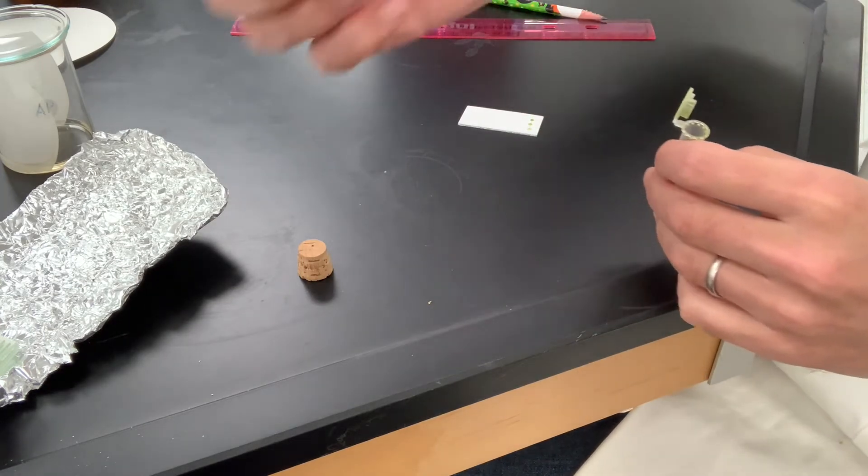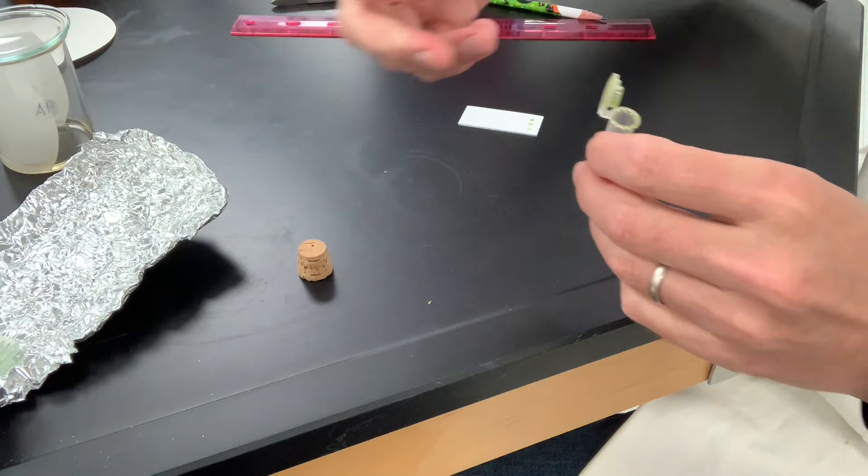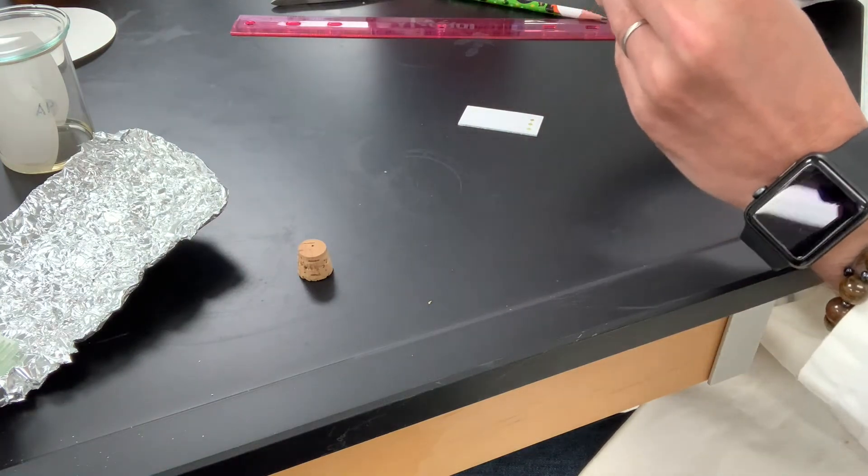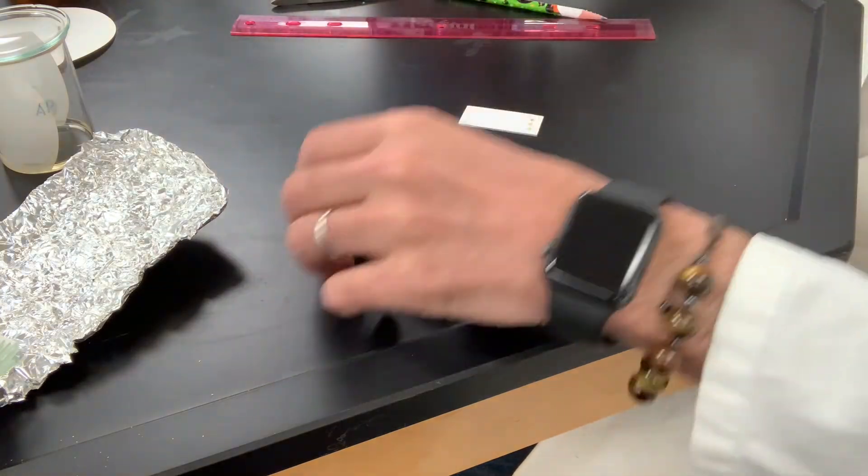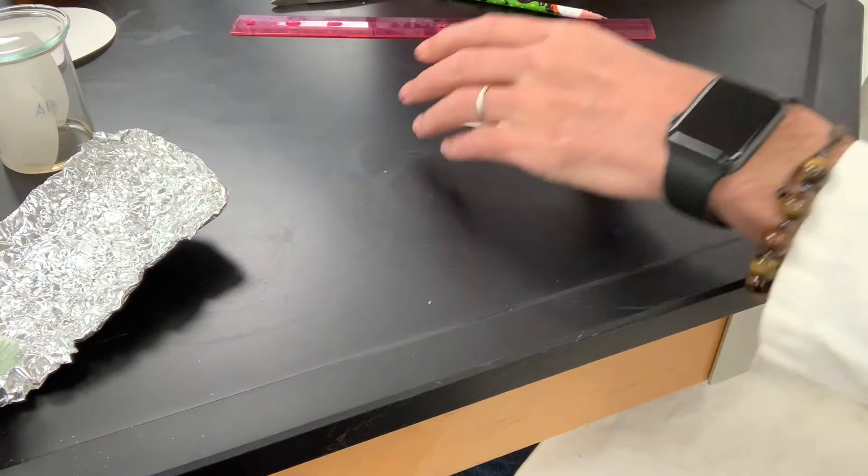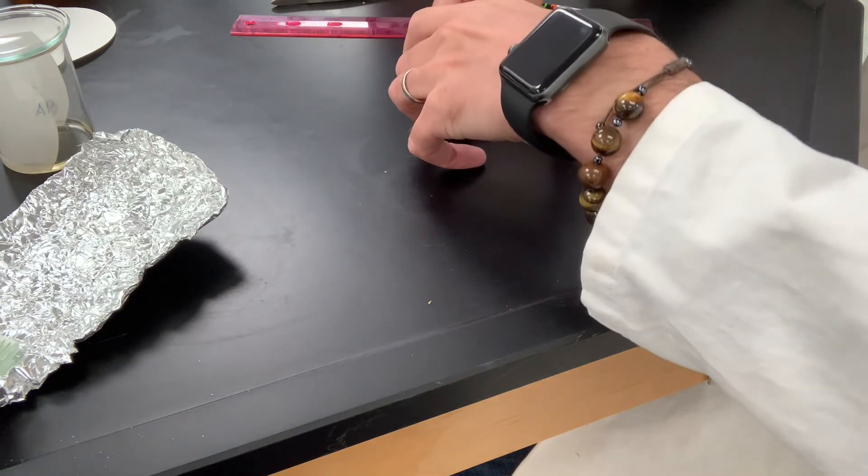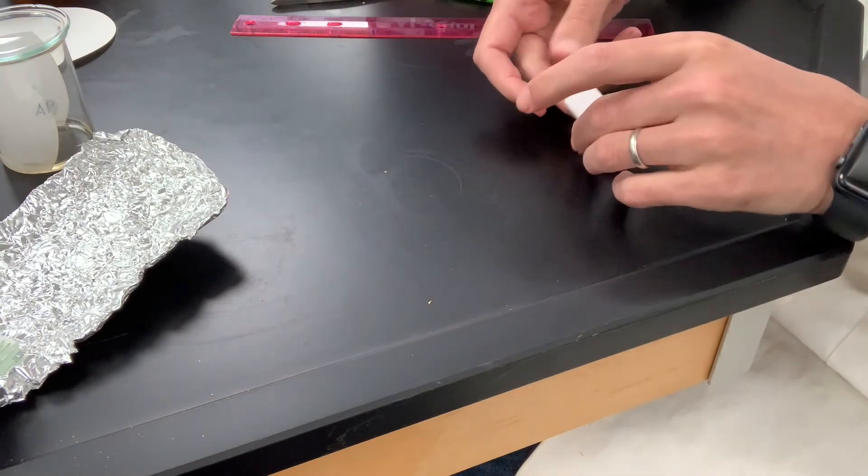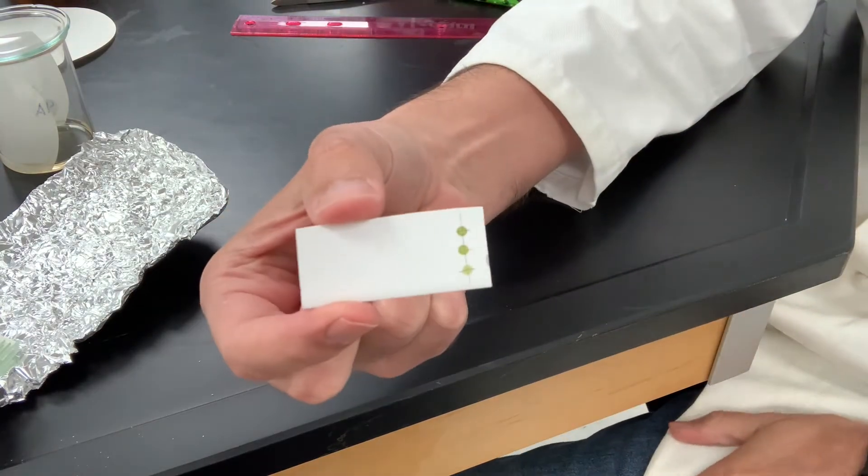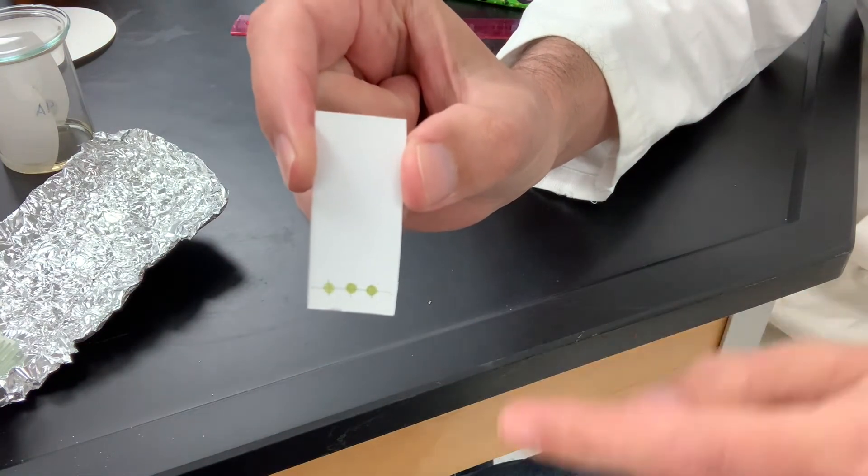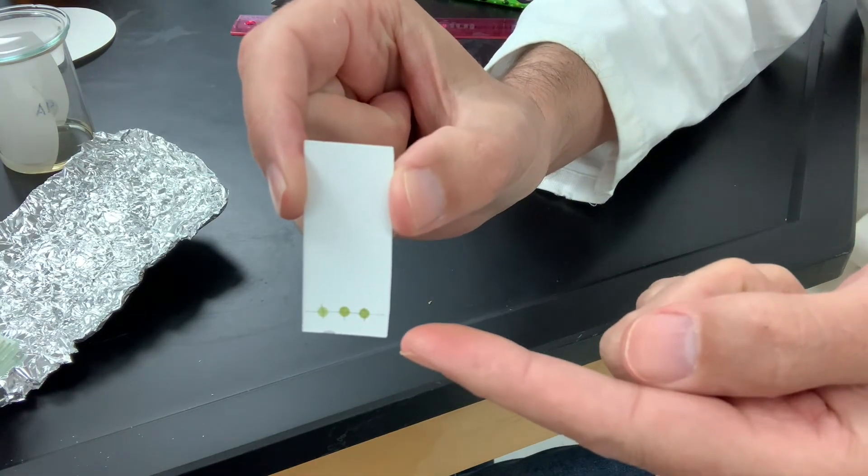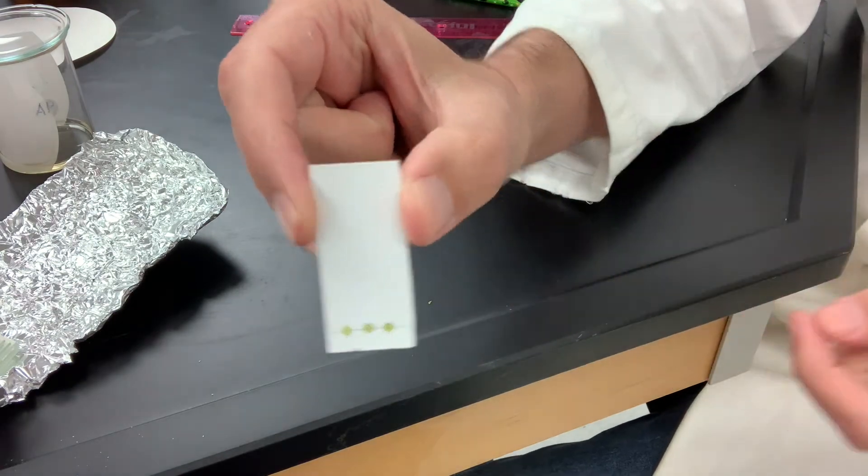All right. And this can be washed out with acetone and reused if you wanted to do that. I'm just going to leave it here in case I mess up and I have to do it again. So this is what our TLC plate looks like. We've got one spot, three spots, five spots. I'm going to place it into the solvent chamber and the liquid's going to go up, and then I'm going to draw a line.